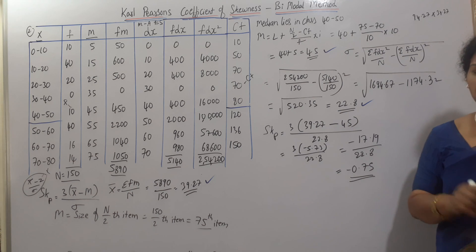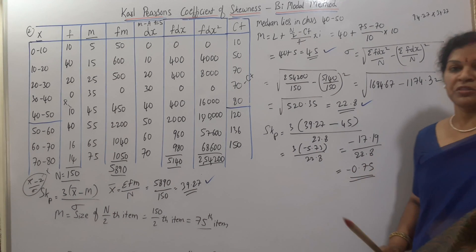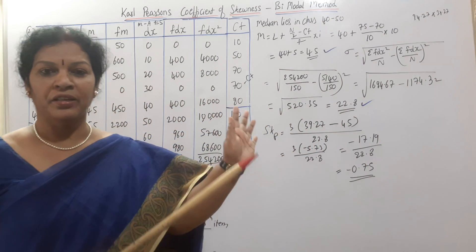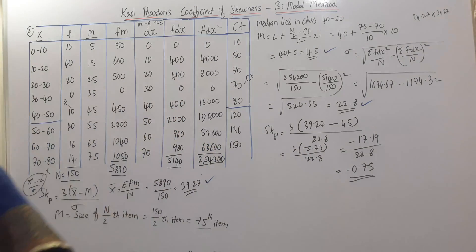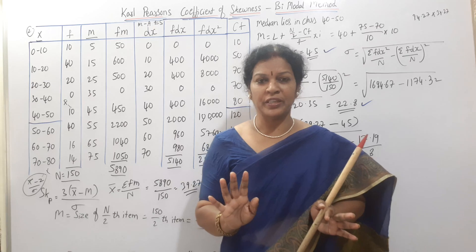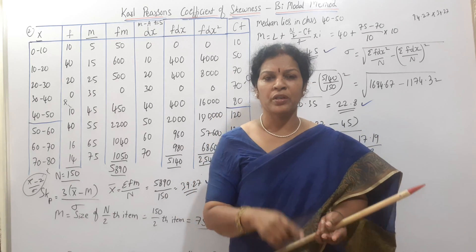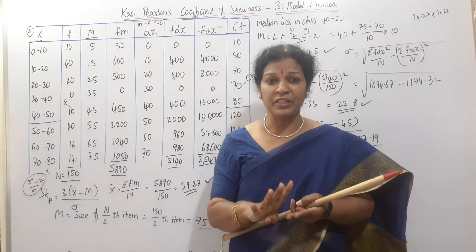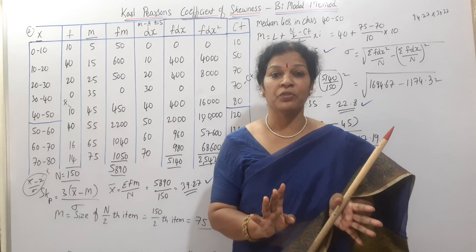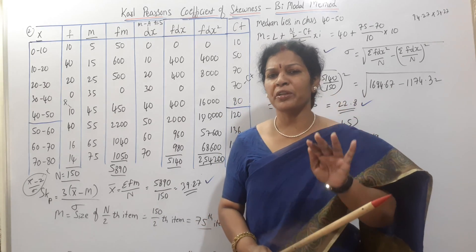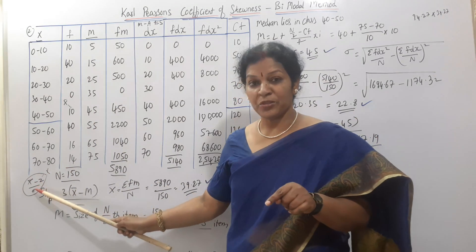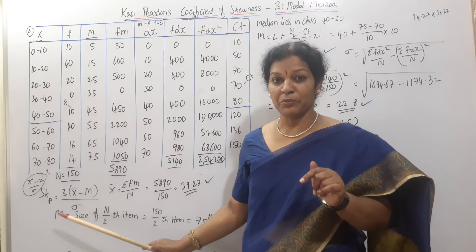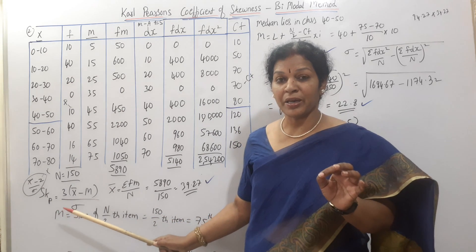SKP is generally expected to give a positive value, but here we get a negative value of minus 0.75. This negative value shows that x-bar and median are in a negative distribution. So the answer is minus 0.75. To summarize: first check whether mode can be defined. If it can, use x-bar minus z by rho. If not (bimodal), use 3 into x-bar minus median divided by standard deviation.